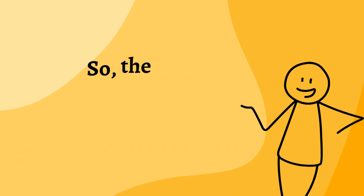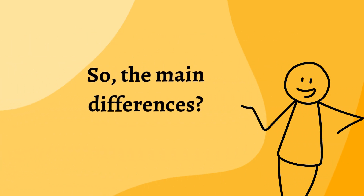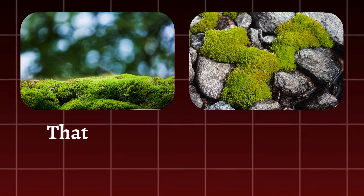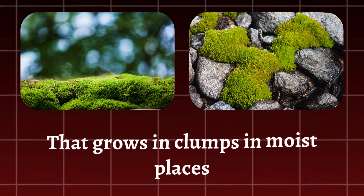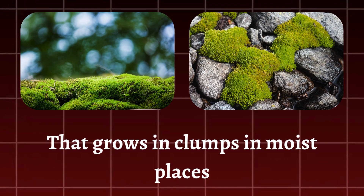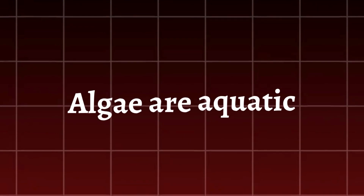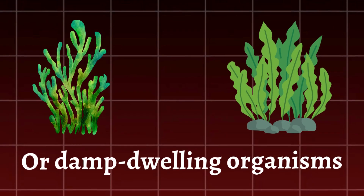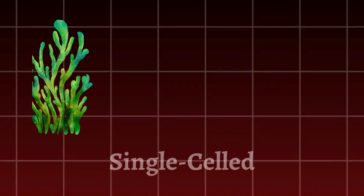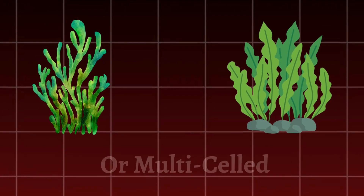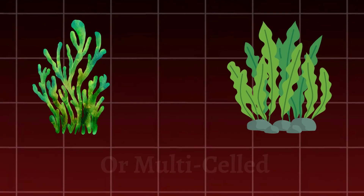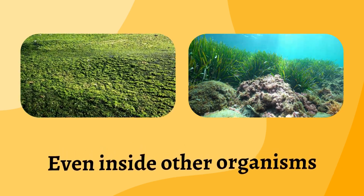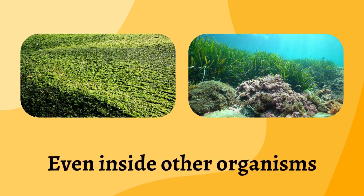So, the main differences: Moss is a small land plant that grows in clumps in moist places. Algae are aquatic or damp-dwelling organisms that can be either single-celled or multi-celled, and live in water, on rocks, or even inside other organisms.